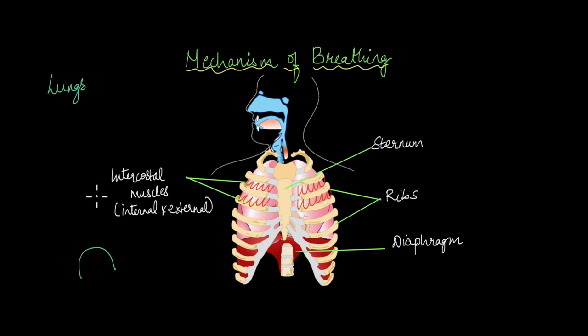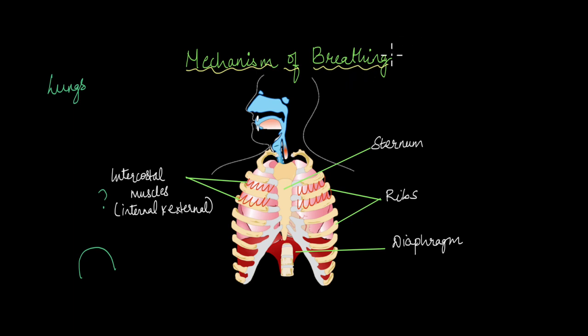The intercostal muscles are the muscles that connect the ribs. There are two types: internal and external. All of these structures are involved in the mechanism of breathing.